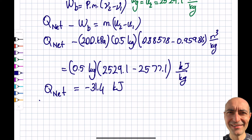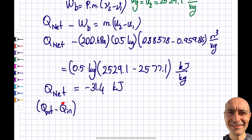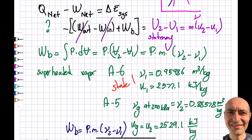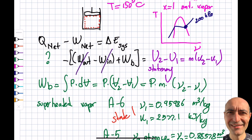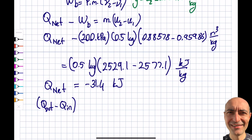The result is Q_net = -31.4 kJ. If we assume no heat loss to the environment, then Q_in = 31.4 kJ — heat must be added to the system. This makes sense: for a closed system, energy transfer is either work or heat, and in this compression process, it is heat being added. Thank you for watching.